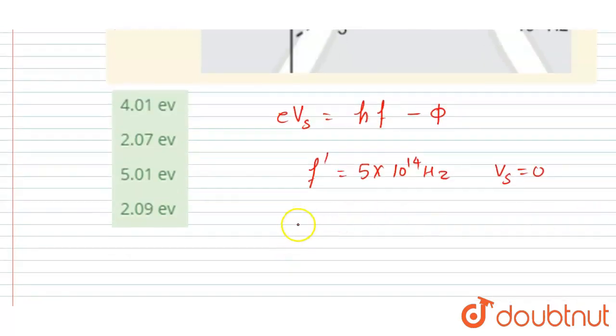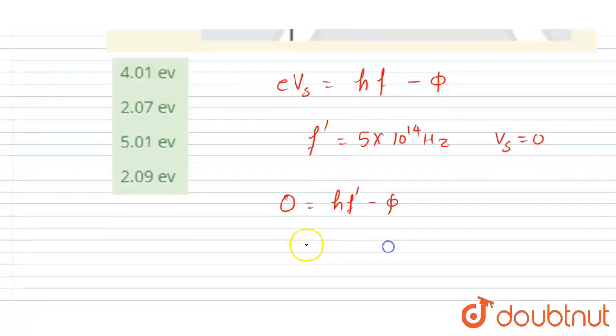So we'll make the stopping potential zero at f equals to f dash. So the work function will be equals to h into f dash, where h is the Planck constant.